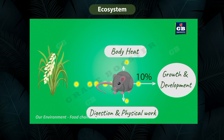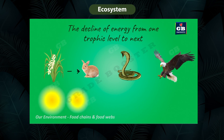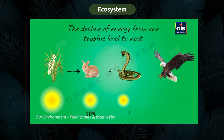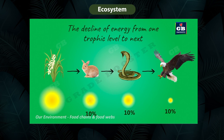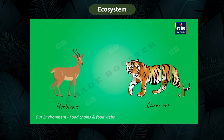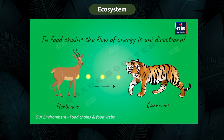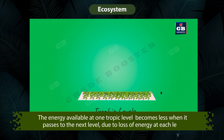On average, only 10 percent of energy obtained from food is useful for body growth and development; the rest is spent on various activities. So in a food chain, only 10 percent of energy from level 1 is available for level 2, only 10 percent from level 2 for level 3, and only 10 percent from level 3 for level 4. This gradual decline of energy is why food chains usually have only three to four levels. The flow of energy in a food chain is unidirectional — energy flows from a herbivore to a carnivore, never in reverse.